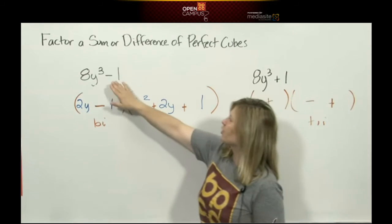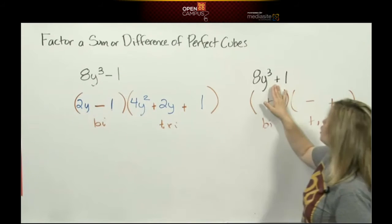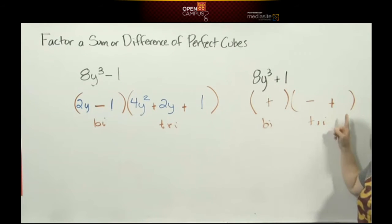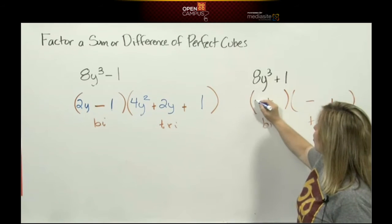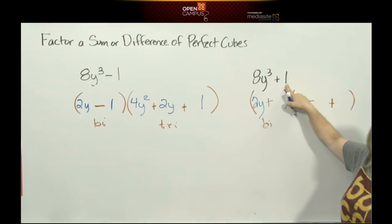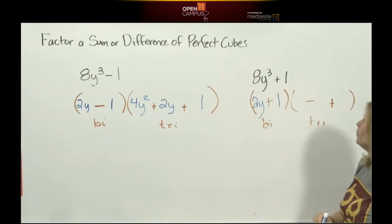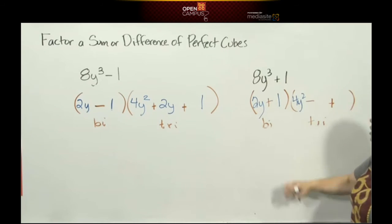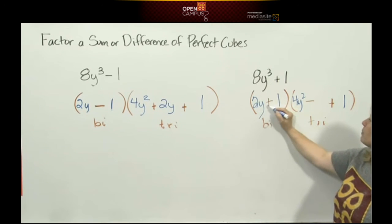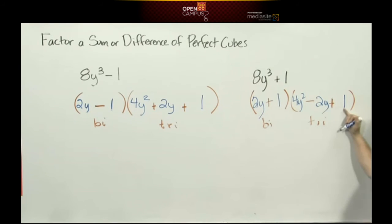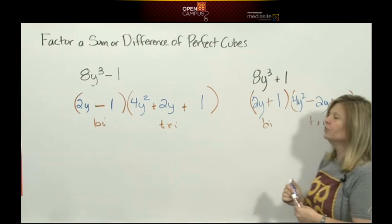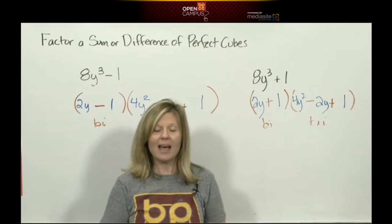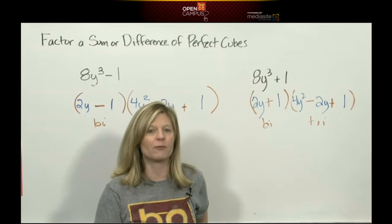Okay. Even if I change this from a difference of perfect cubes to a sum of perfect cubes, I'm going to get the same terms. I just have different signs. What did I multiply to give me 8y³? 2y. What did I multiply to give me 1? 1. Alright. Take this and square it. 2y times 2y is 4y². Take this term and square it. 1 times 1 is 1. Multiply the terms to get the middle. 2y times 1 is 2y. That trinomial, even though you can try all you want, will never factor. And that's all there is to factoring a sum or difference of perfect cubes.